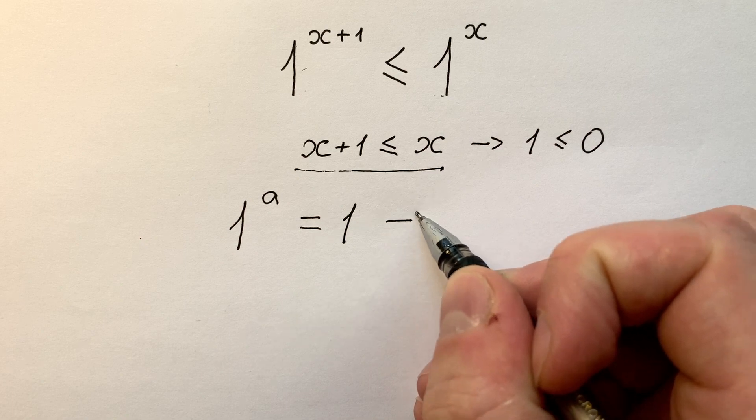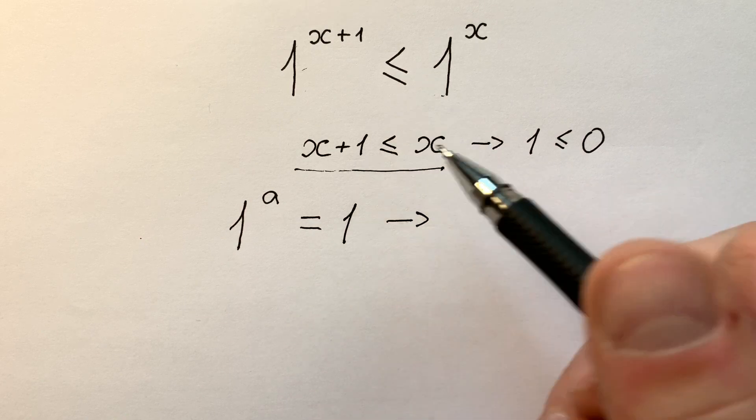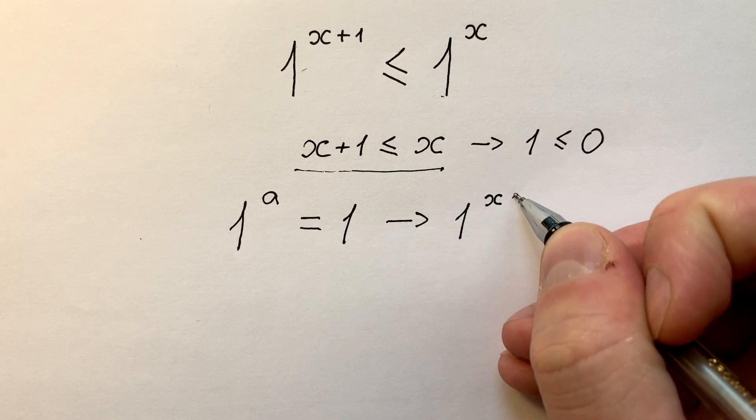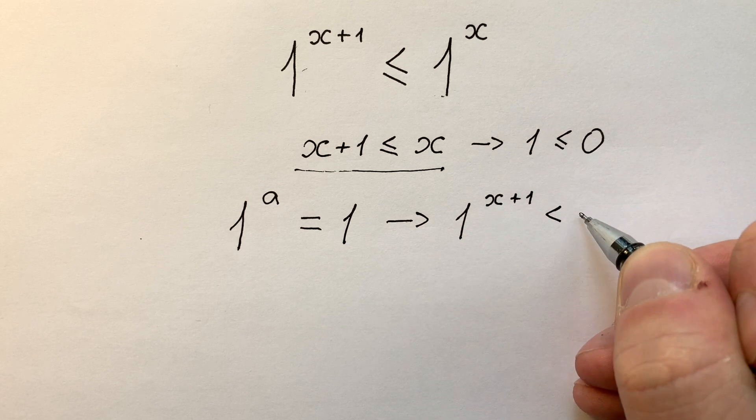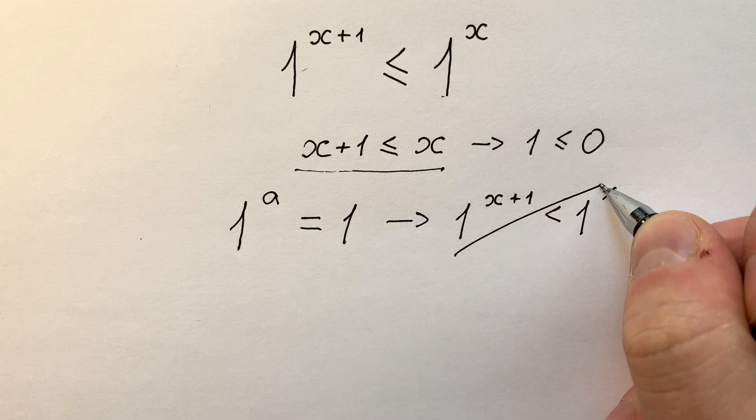That's why there is no way in this equation like 1 to the power of x plus 1 is less than 1 to the power of x. There is no way.